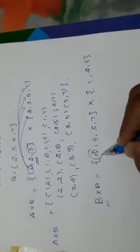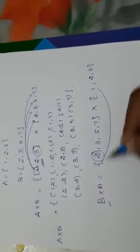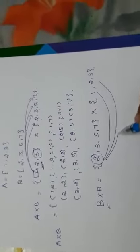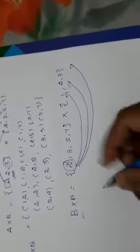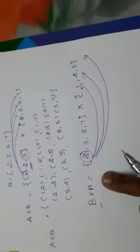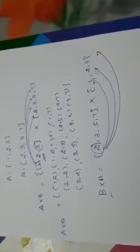Now you have to take this first element. You have to write the ordered pair with these 3 elements. So this B cross A, try it by yourself and complete it.